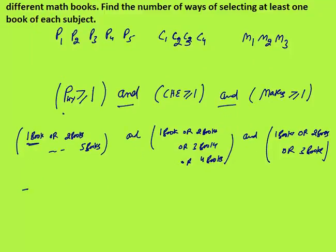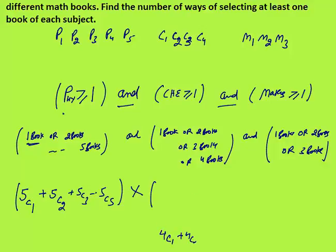For physics: one book can be selected in 5C1 ways, two books in 5C2 ways, three books in 5C3 ways, up to 5C5. 'And' means multiplication. For chemistry: one book in 4C1 ways, two books in 4C2 ways, three books in 4C3 ways, all four books in 4C4 ways. So this is 4C1 to 4C4.